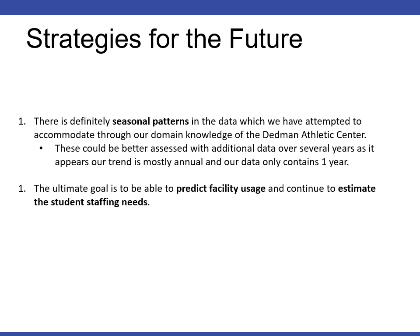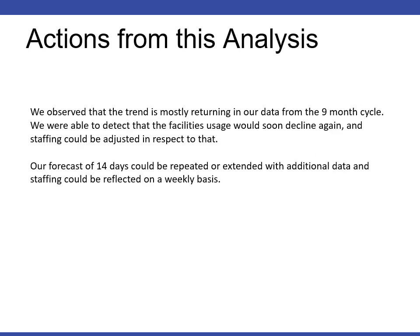So we found that there was definitely seasonal patterns in the data, which we have attempted to accommodate through our domain knowledge of the Dedman Center. This could better assist with additional data over several years and appears our trend is mostly annual with our data only consisting of one year. The ultimate goal is to be able to predict facility usage and continue to estimate the student staffing needs. We did observe that the trends mostly returning in our data from the nine month cycle. We were able to detect that the facility's usage would soon decline again and staffing could be adjusted to respect that. Our forecast of 14 days could be repeated or extended with additional data and staffing could be reflected on a weekly basis.